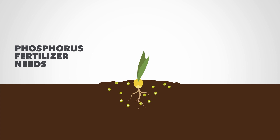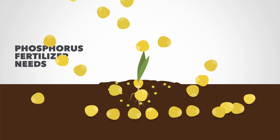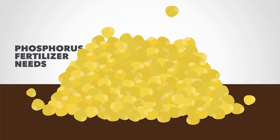Because of this, placement of phosphorus fertilizers is a major management decision. In many scenarios, placing phosphorus close to the seed as a starter fertilizer results in increased yield.